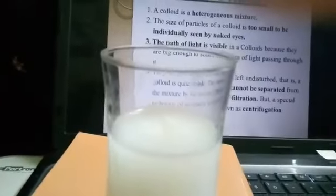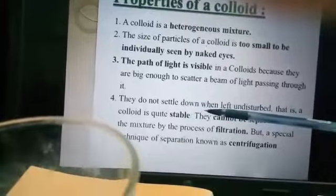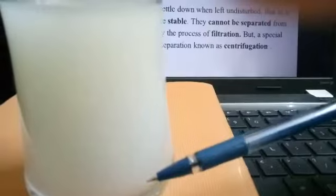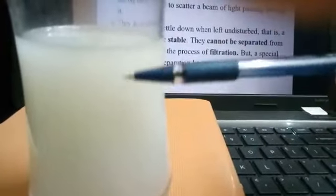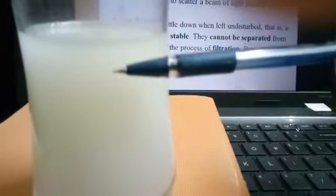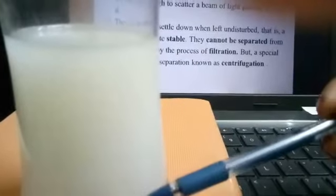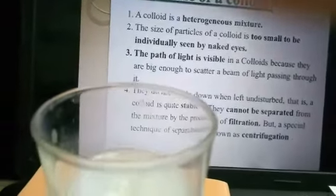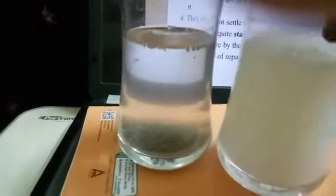The path of light is visible in the colloidal solution. Unlike suspension, the milk particles do not settle down — the solution remains uniform. In suspension, there was a clear layer of sand with a clear upper layer, but here the milk remains dispersed. This type of solution is stable, and you cannot separate it by filtration. Now comparing all three glasses — true solution, suspension, and colloidal solution.